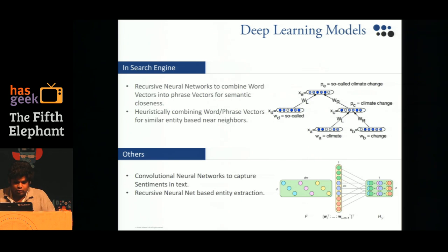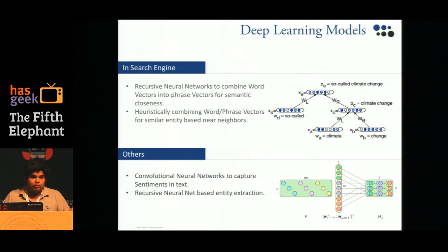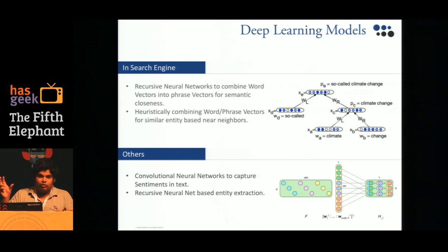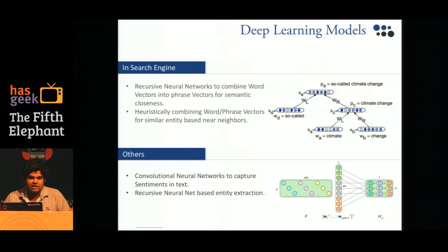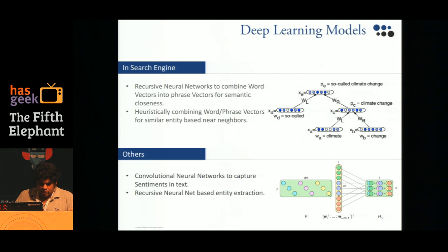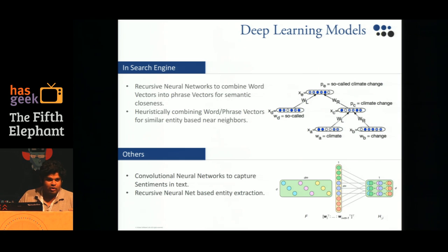Apart from this, we have two other algorithms. We have a convolutional neural network based sentiment analysis that convolves over n-grams of word embeddings to extract sentiment. We also offer a recursive neural network based entity extraction as an API.